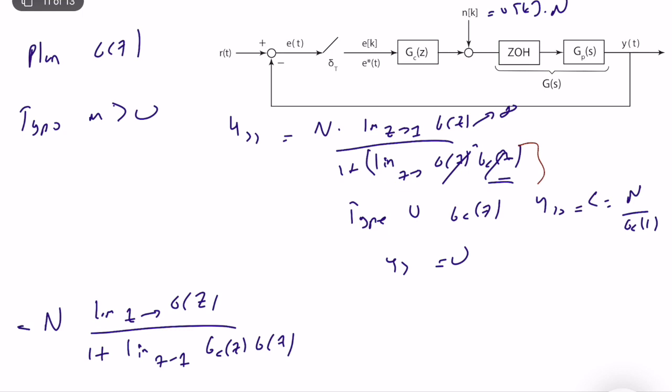The idea is that when analyzing steady-state response for inputs other than tracking error, your computation can depend on different factors and you should be careful with intuition. In this type of analysis, I recommend not just using formulas or results from lecture notes, but applying the final value theorem directly, finding the output, and then commenting on the results — because sometimes intuition can fail you.